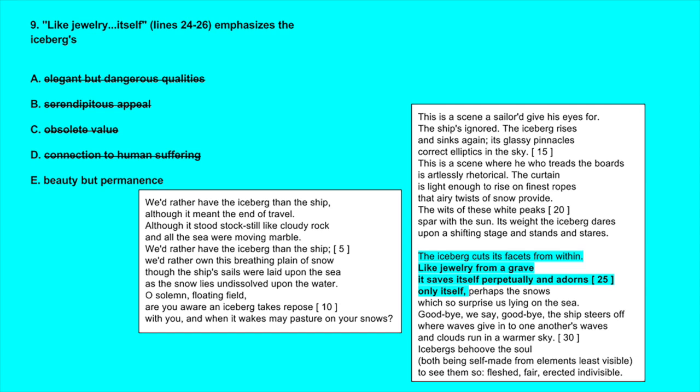And that leaves us with E, beauty but permanence. This is the best answer. Jewels are beautiful, so comparing the iceberg to jewelry implies beauty, and it says it saves itself perpetually, which indicates permanence. So of the choices we have, E, beauty but permanence, is the best answer.